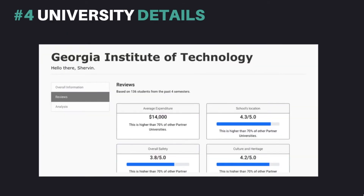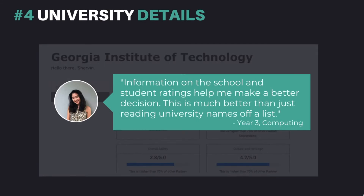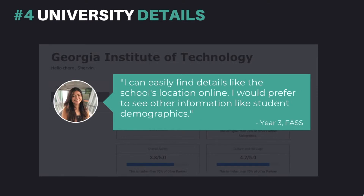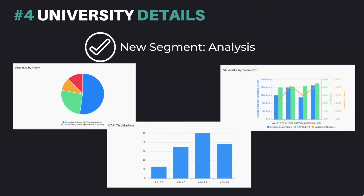Coming in fourth place, users' feedback indicated that university details addressed their problems of the lack of information on universities, as well as student reviews and ratings for each university. However, students stated that details such as university description and location can be easily found online, whereas demographic information, such as student distribution across majors and semesters, were more crucial. Thus, we added a new segment, Analysis, which provides users with student reviews and demographics, such as the percentage of students from each major and their CAP distribution.